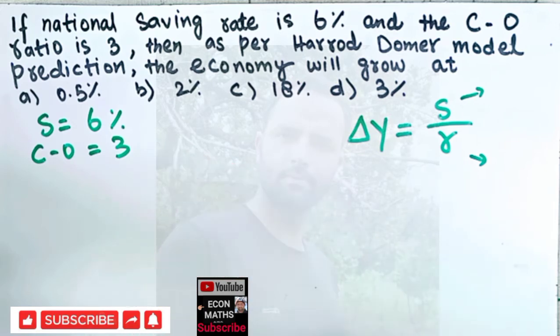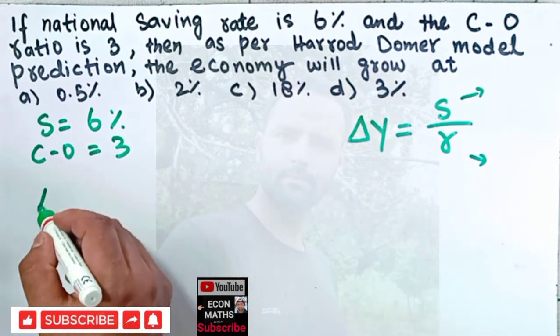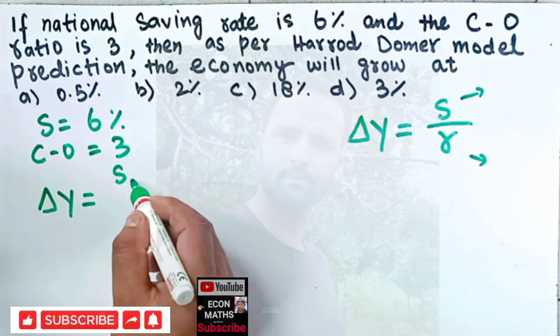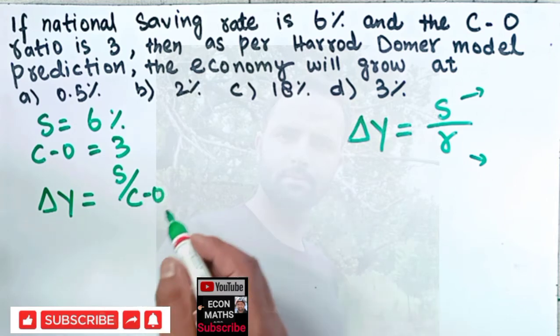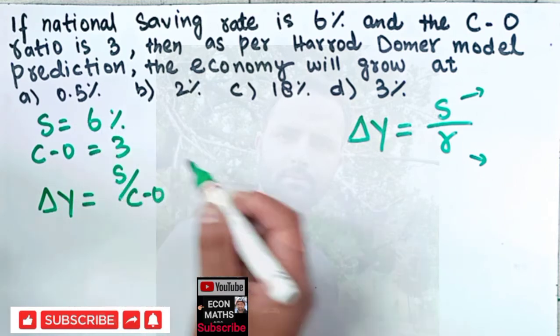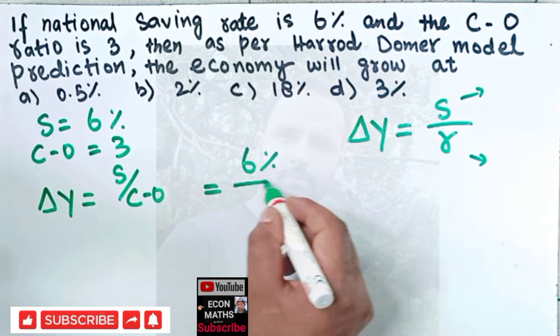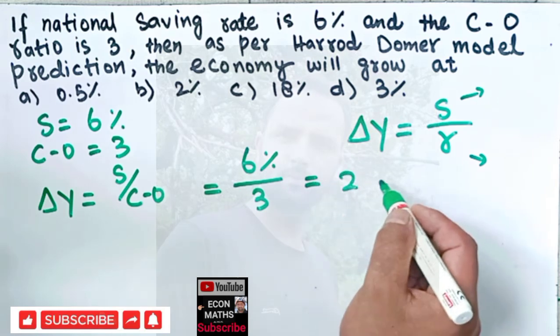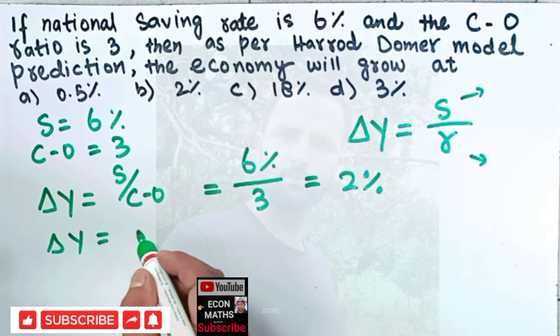What would be our rate of growth of the GDP? ΔY equals S over capital output ratio. Our savings is 6% divided by the capital output ratio that is 3, which equals 2%.